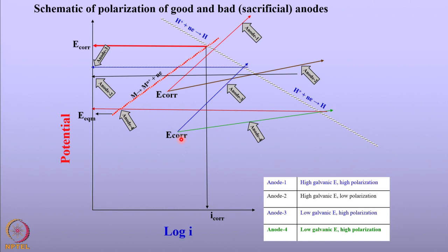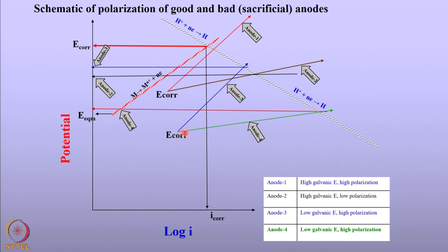Take another anode having the same E_cor but whose polarization is quite steep — it establishes a galvanic potential slightly higher than anode 2. That means it is able to protect the structure at a much lower capacity. Anode 4 has a lower corrosion potential and is less polarized, so it gives a much lower galvanic potential. As a consequence, the metal is protected much better compared to anodes 1, 2, and 3. So the efficacy of the anode depends upon both the galvanic potential and the polarization.